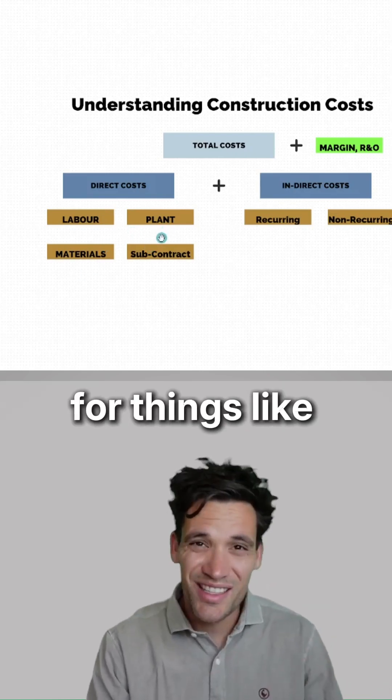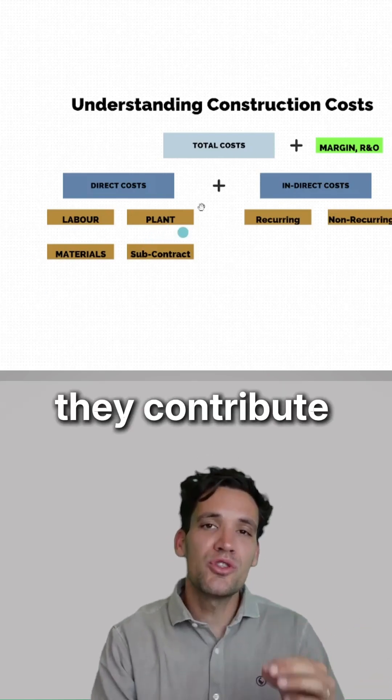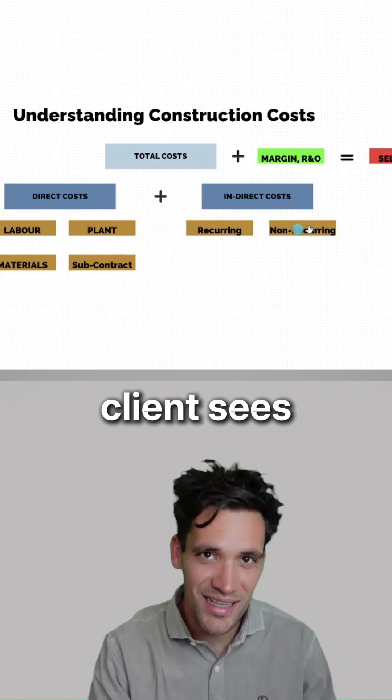These are the costs for things like pouring concrete, installing structural steel, or pulling electrical cables. They contribute to the finished product our client sees.